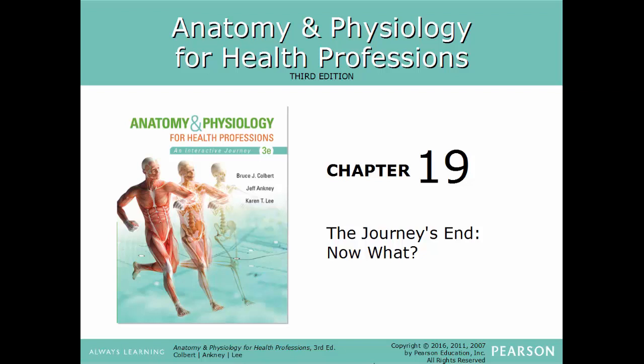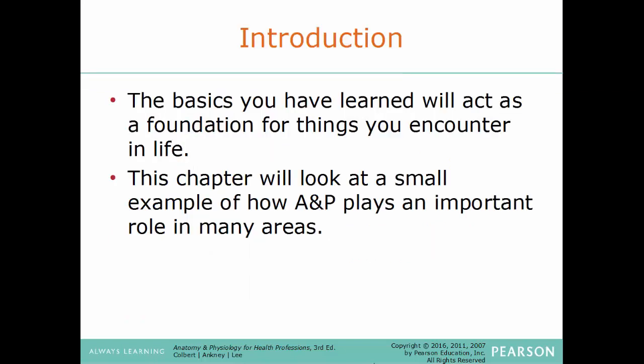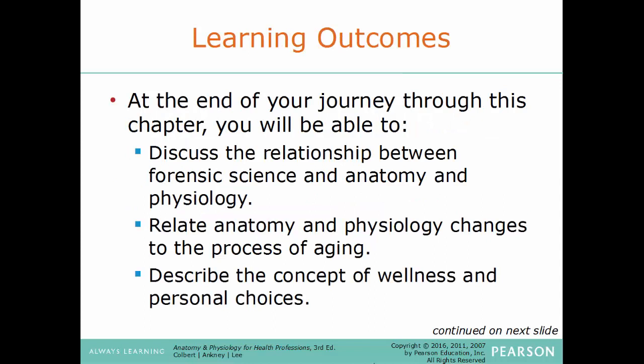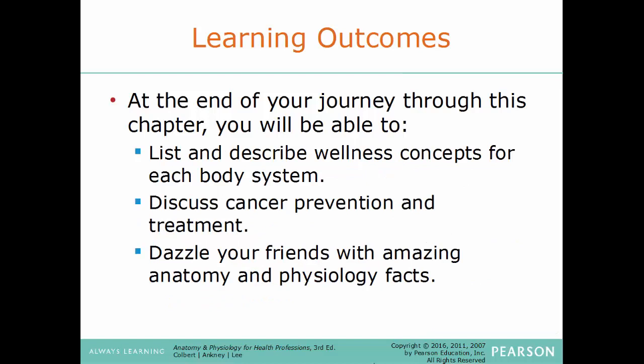Welcome back. In this video, we will cover our last chapter in our Anatomy and Physiology for Health Professionals course, 'The Journey's End, Now What?' The learning outcomes for this chapter include: discuss the relationship between forensic science and anatomy and physiology; relate anatomy and physiology changes to the process of aging; discuss the concept of wellness and personal choices; list and describe wellness concepts for each body system; discuss cancer prevention and treatment; and distill your friends with amazing anatomy and physiology facts.